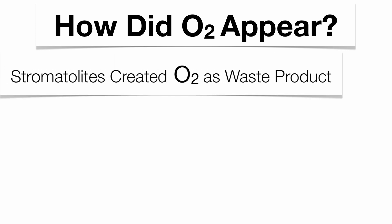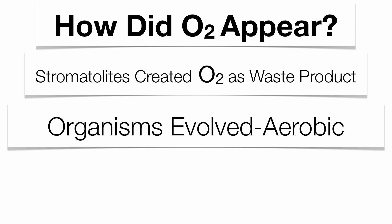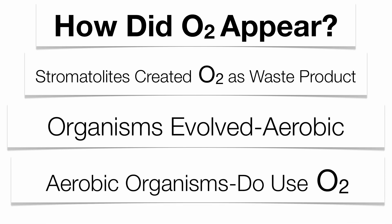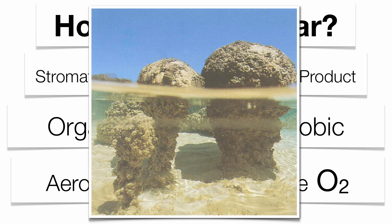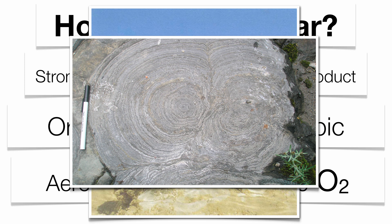How did oxygen build up in the atmosphere? It all came from a type of algae called stromatolite. Stromatolites used the noxious gases in the atmosphere as a food source and created oxygen as a waste product. Over a couple billion years, enough oxygen built up that aerobic organisms — those that do use oxygen — began to evolve. There's an actual photograph of a current-day living stromatolite, one of the oldest species on the planet, and there's a fossilized stromatolite in Leicester Park in the Adirondack Mountains.